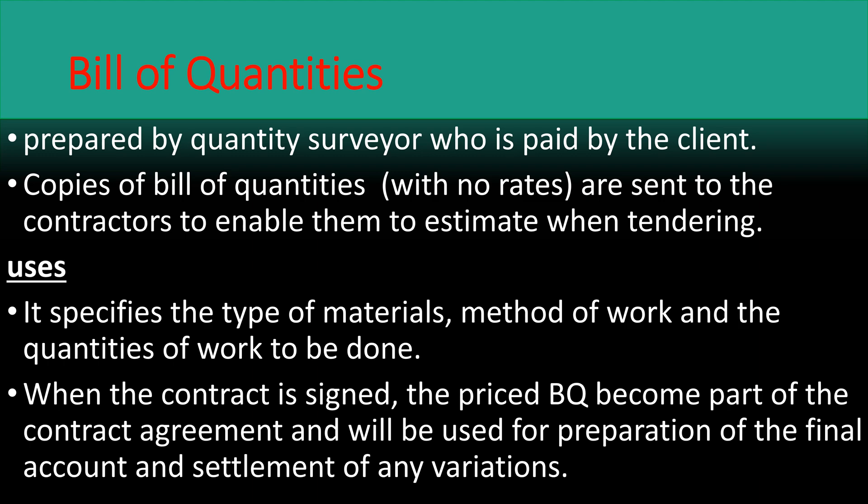The third document is the bill of quantities. It is usually prepared by the client's quantity surveyor, whose fee is paid by the client. Copies of the bill of quantities are sent to the contractor to enable them to estimate when tendering. The bill of quantities specifies the type of materials, methods of work, and the quantities of work to be done. The quantity surveyor gives instructions such as excavate, deposit soil away from the site, and also gives directions about how the work shall be done. The bill of quantities usually gives the price of the project.